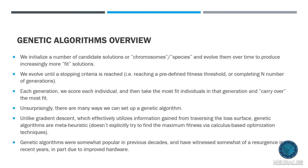With each generation, you score each individual using a fitness function. The idea is to take the most fit individuals and carry the aspects that make them fit to the next generation. Unlike gradient descent, which is a calculus-based approach utilizing information from traversing the loss surface, genetic algorithms are meta-heuristic. They operate on the hypothesis that fitter models should be kept and will improve over time - it's more axiomatic. But it works fairly well most of the time.